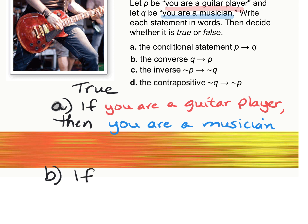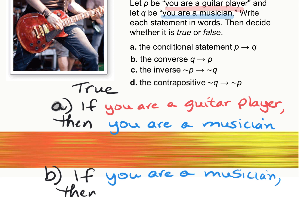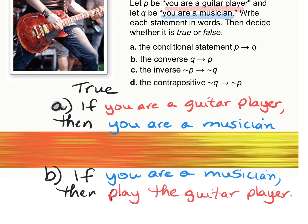For the converse, I'm going to take the blue and put it first. So if you are a musician, then you are a guitar player — or 'then you play guitar.' You can change it so it sounds better. This would be a false statement because you might be a musician but maybe you play the piano or the drums, so this could be false.